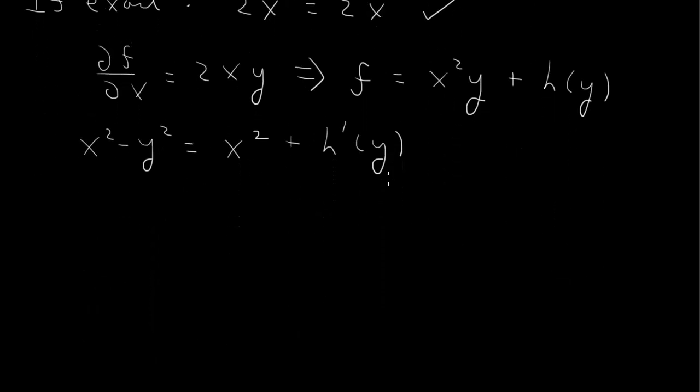So that gives us an equation for h prime. So h prime, the x's cancel, is minus y squared. So now we integrate both sides of this, so we get h is equal to the integral of minus y squared, which is minus y cubed over 3, plus some constant.